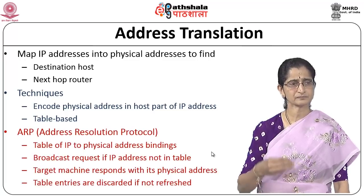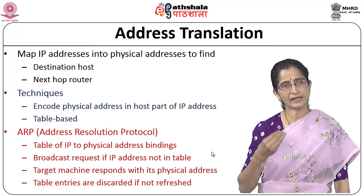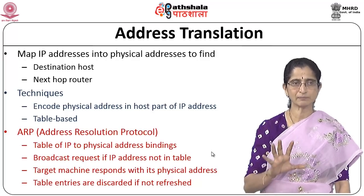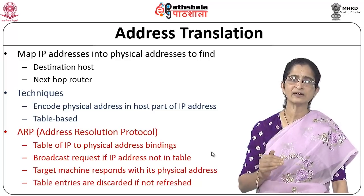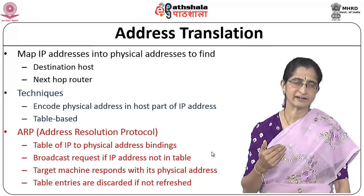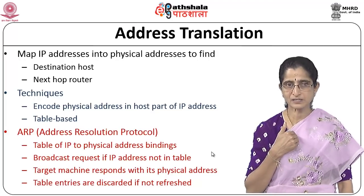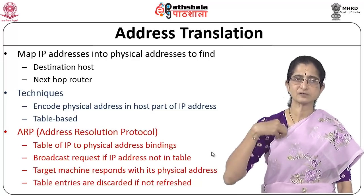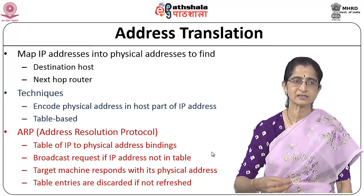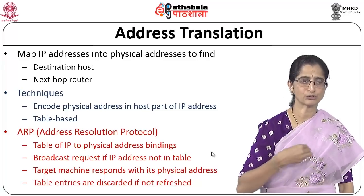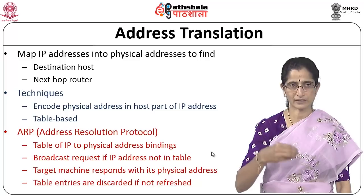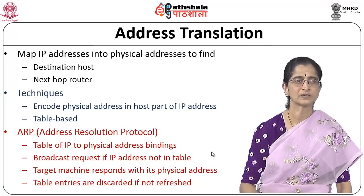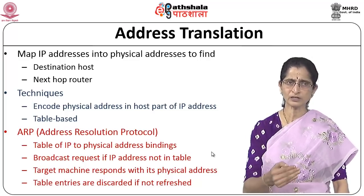That is what is done in the ARP protocol — the address resolution protocol. ARP has a table of IP-to-physical-address bindings. When it requires a binding for an IP address not in the table, it broadcasts that IP address. The target machine which has that IP address responds with its physical address. The new entry is then added to the table. Table entries are refreshed periodically and discarded if not used for some time.